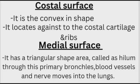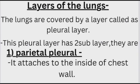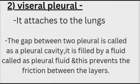The lungs are covered by a layer called the pleural layer. This pleural layer has two sub-layers: the first is the parietal pleura, which attaches to the inside of the chest wall, and the second is the visceral pleura, which attaches directly to the lungs.